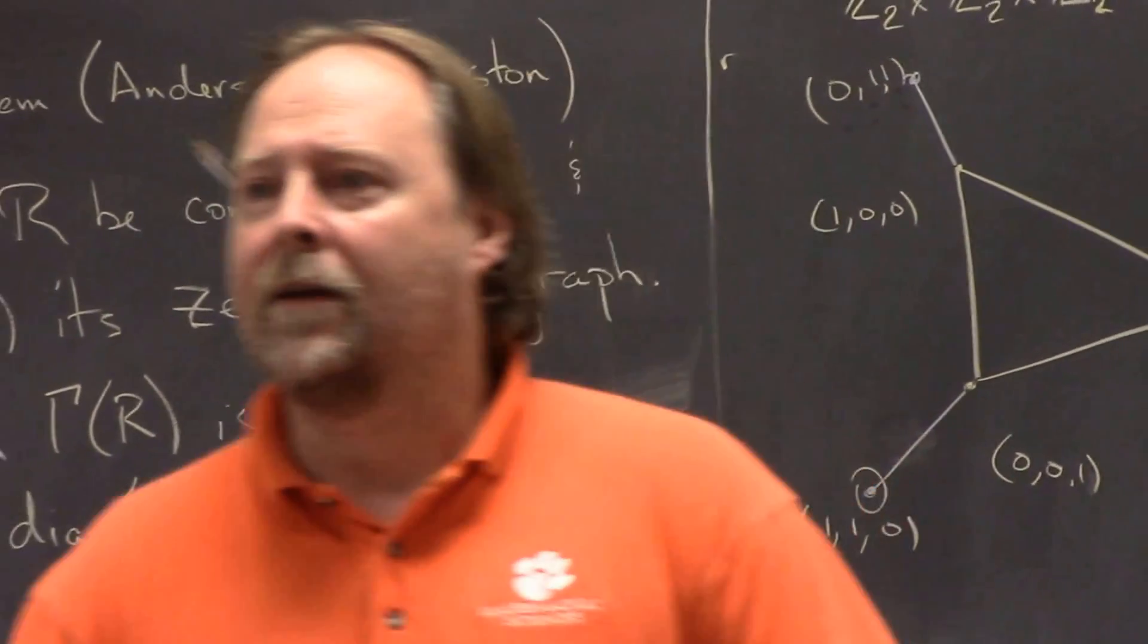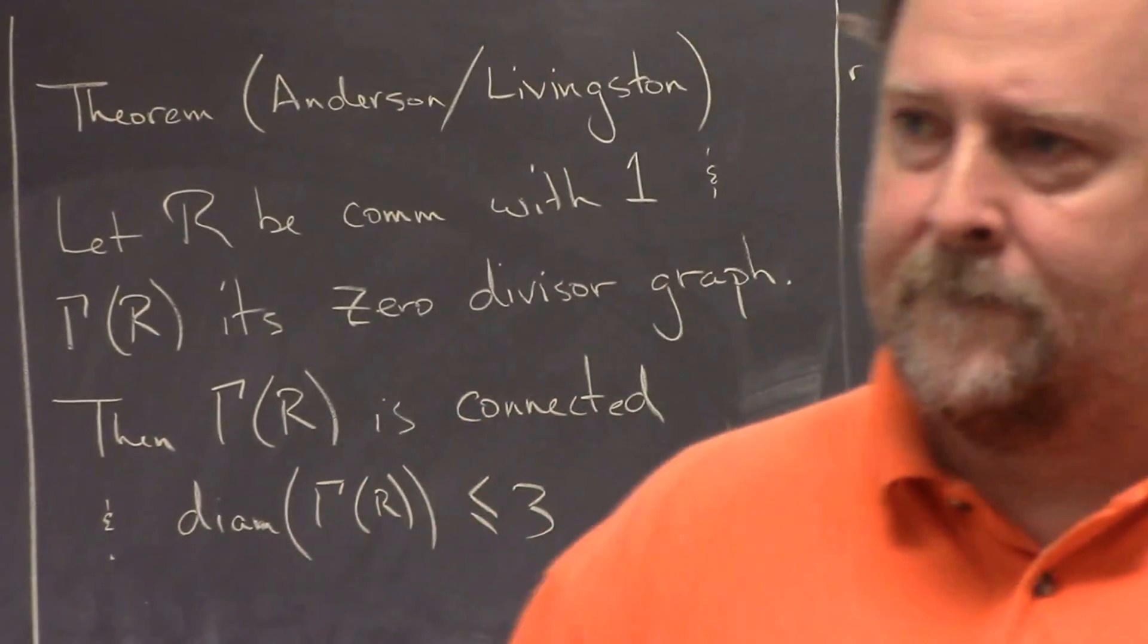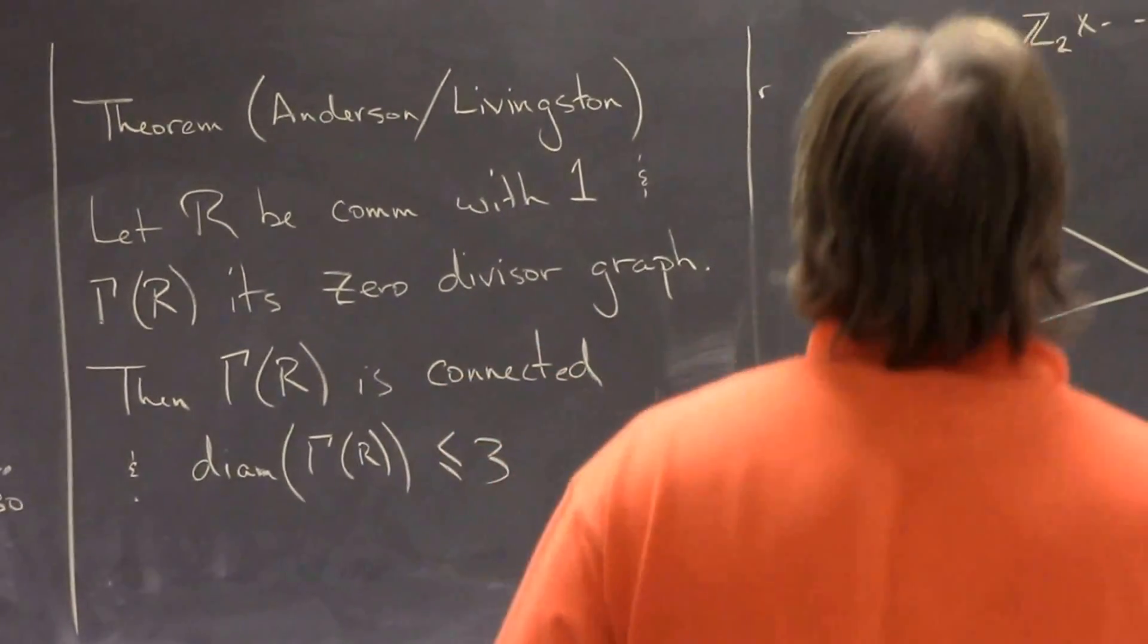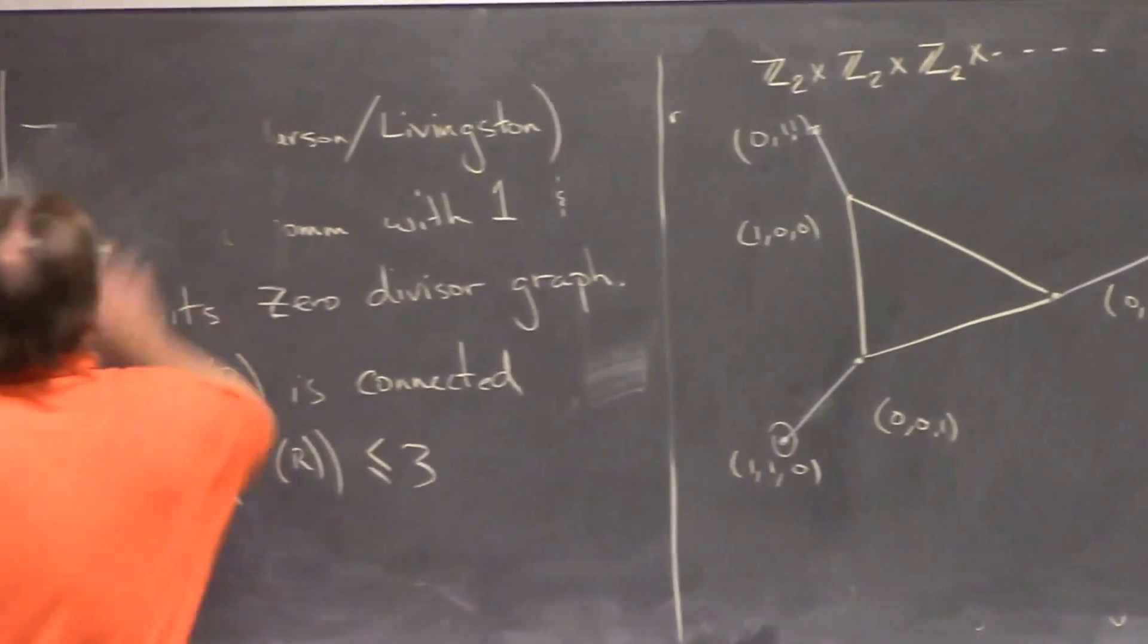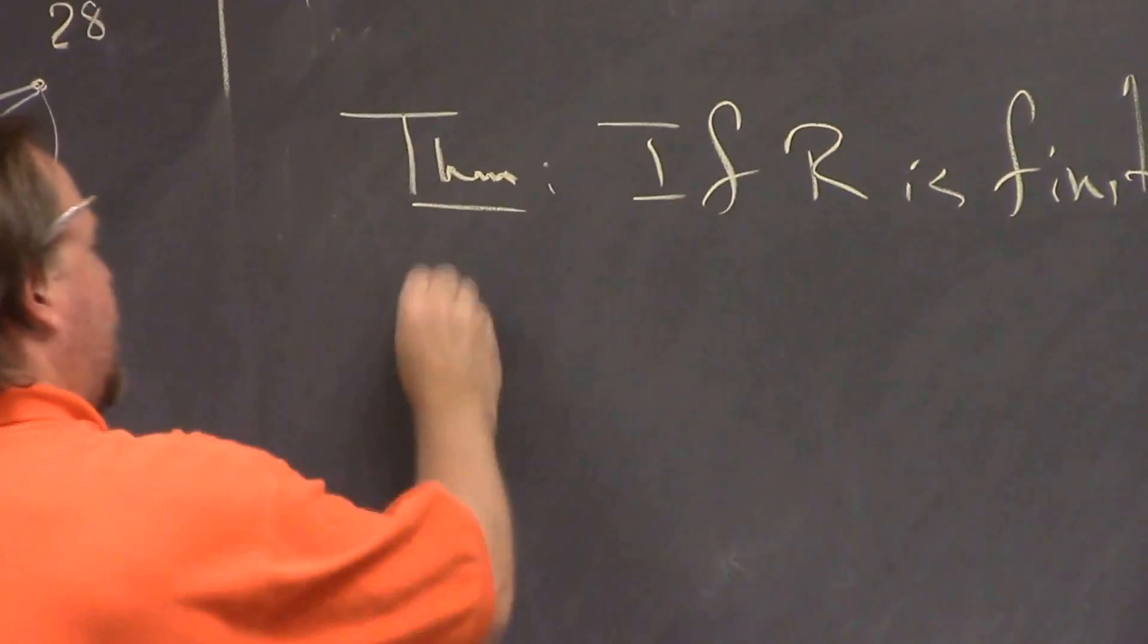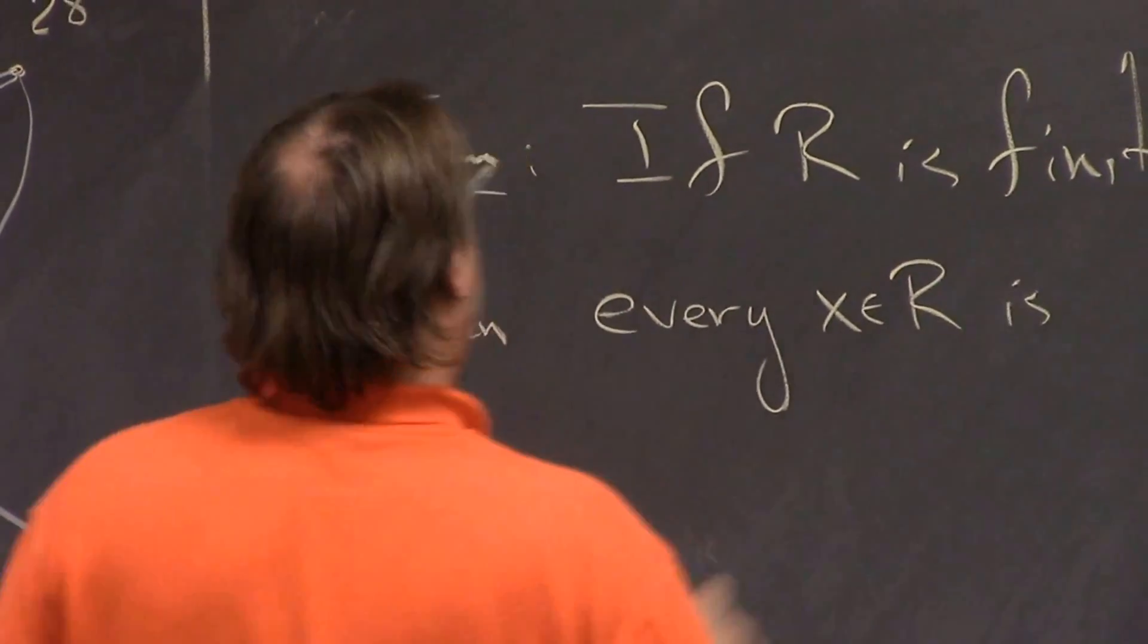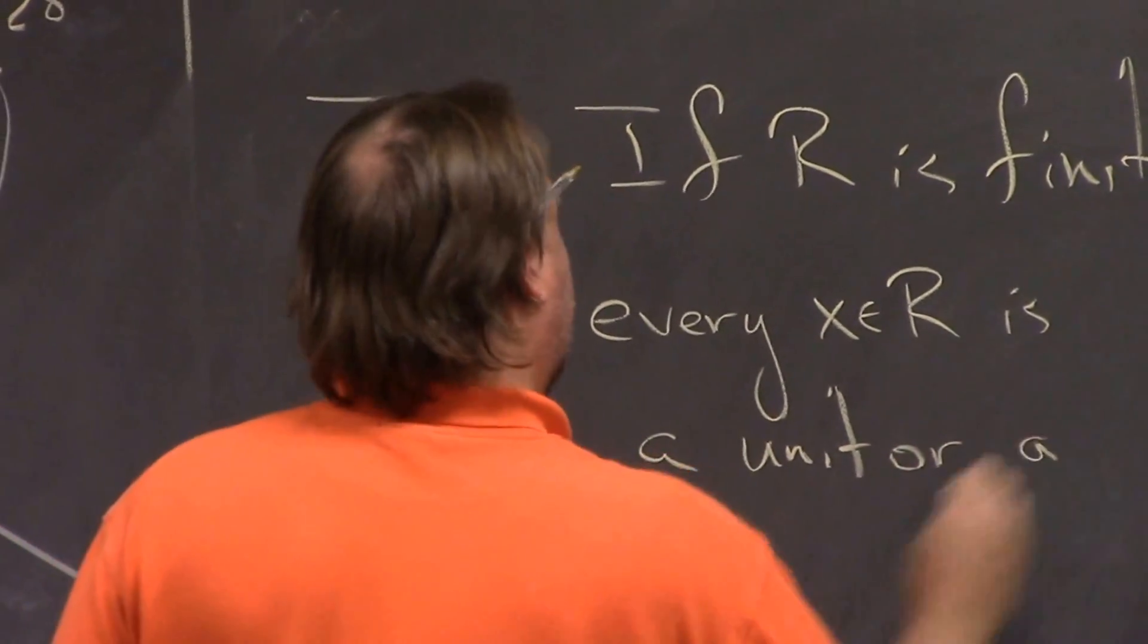Yes. Is there a formula to compute the number of zero divisors for finite rings? Oh, yeah. Yeah. I mean, depending on what they are. I mean, what you can do is, there is a theorem. If it's a finite ring, it's fairly easy because here's what you do. I mean, if R is finite, and again, I mean commutative with identity, then every x in R is either a unit or a zero divisor.